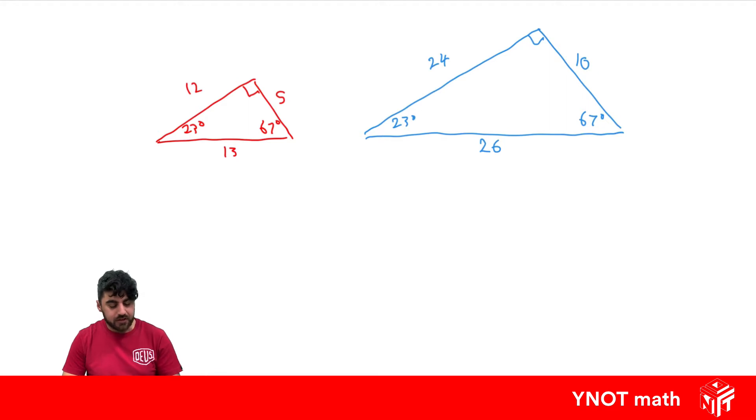And what we've done here is we've created this shape over here where every side is double the original size and every angle is equal. And this is what it means for a shape to be similar.